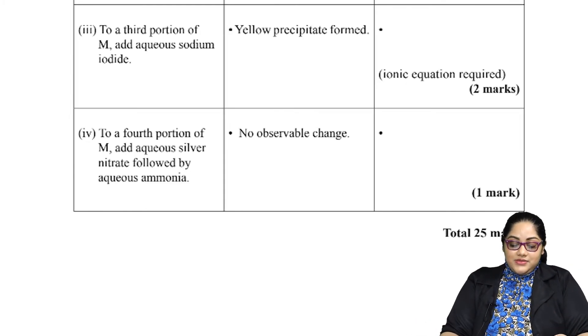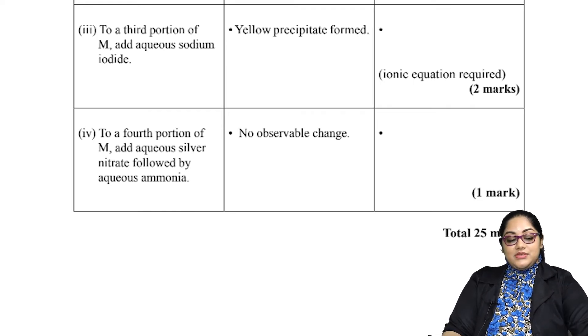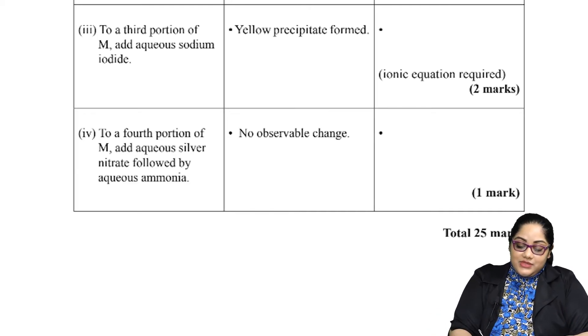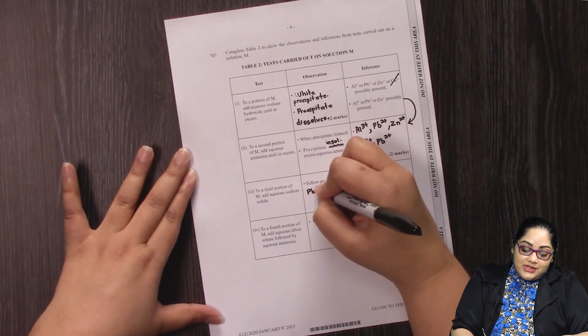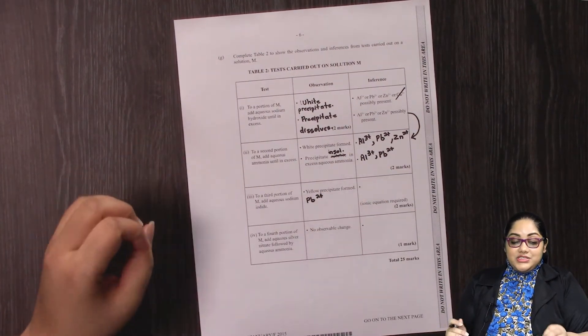In the third part, we are adding to a portion of M sodium iodide and we are going to notice a yellow precipitate being formed. When we have a yellow precipitate being formed, it is automatically lead. I'm going to make a note here that it is the Pb2+ ion that is going to remain.